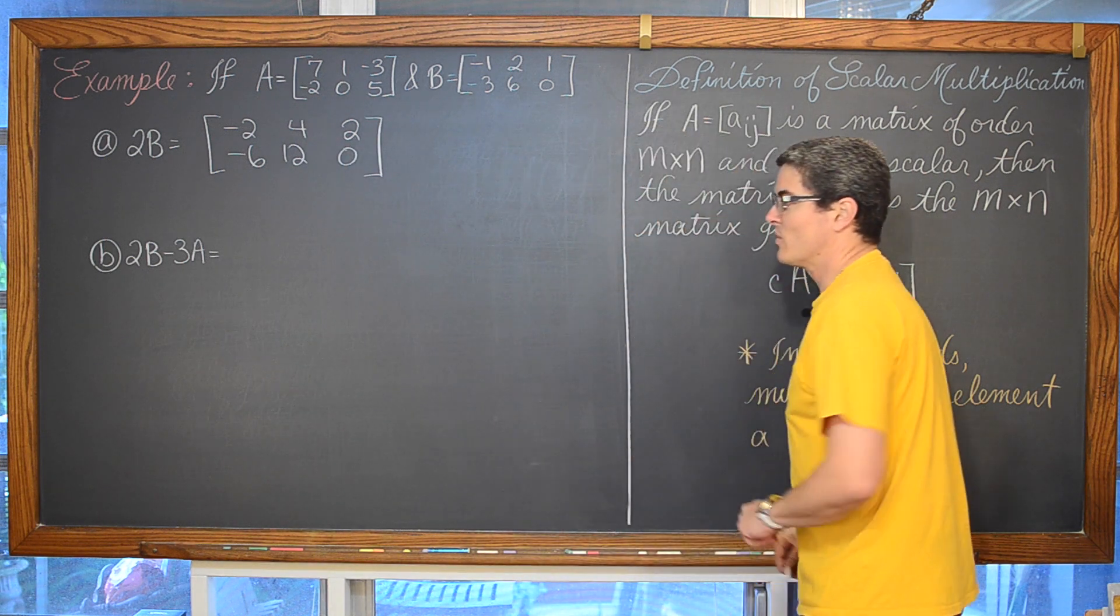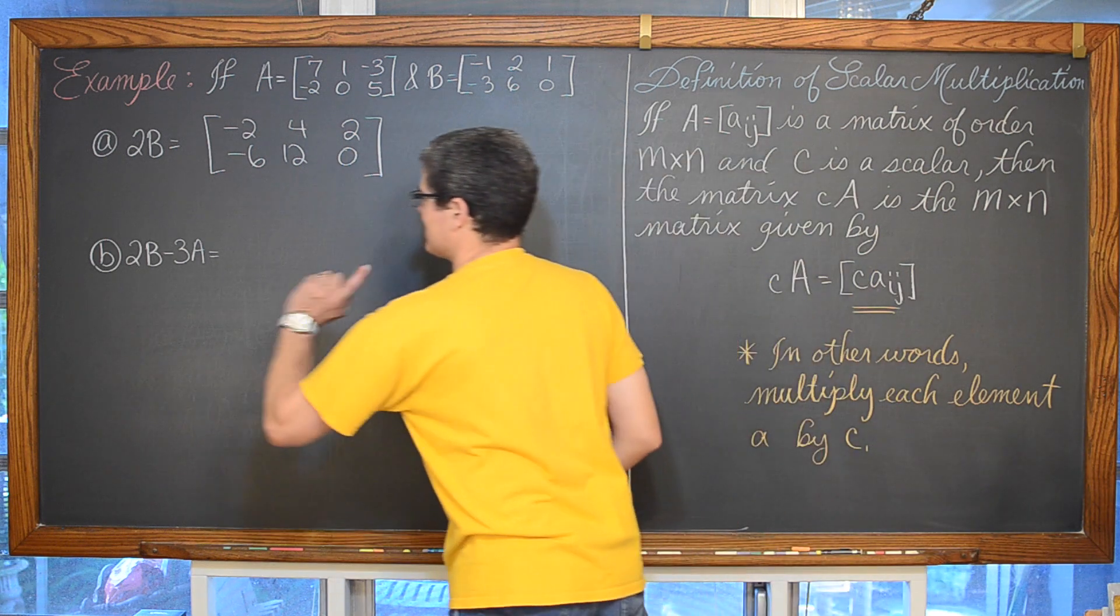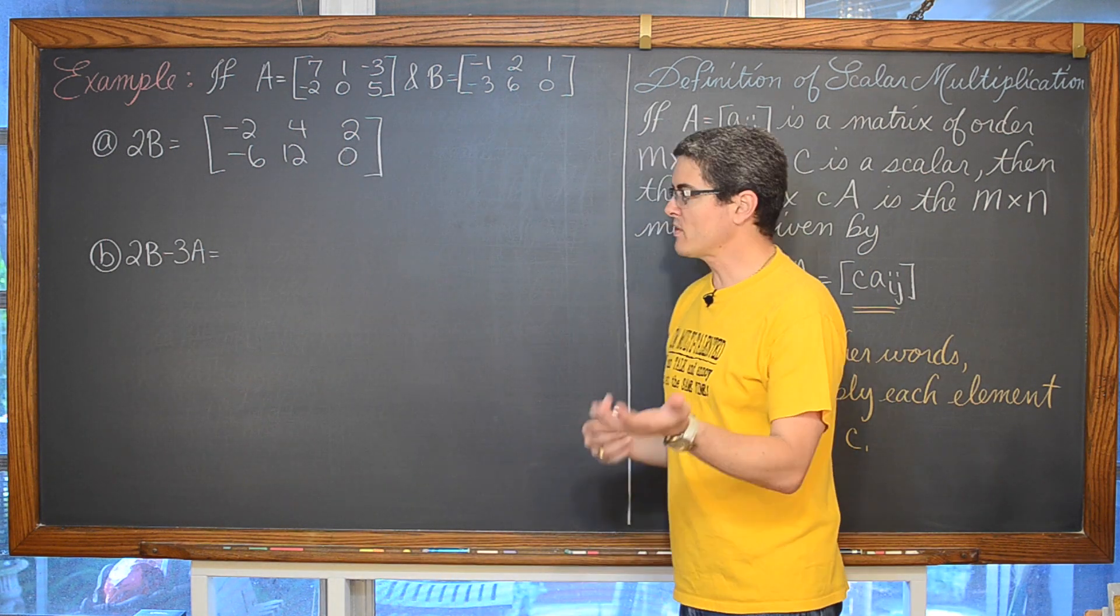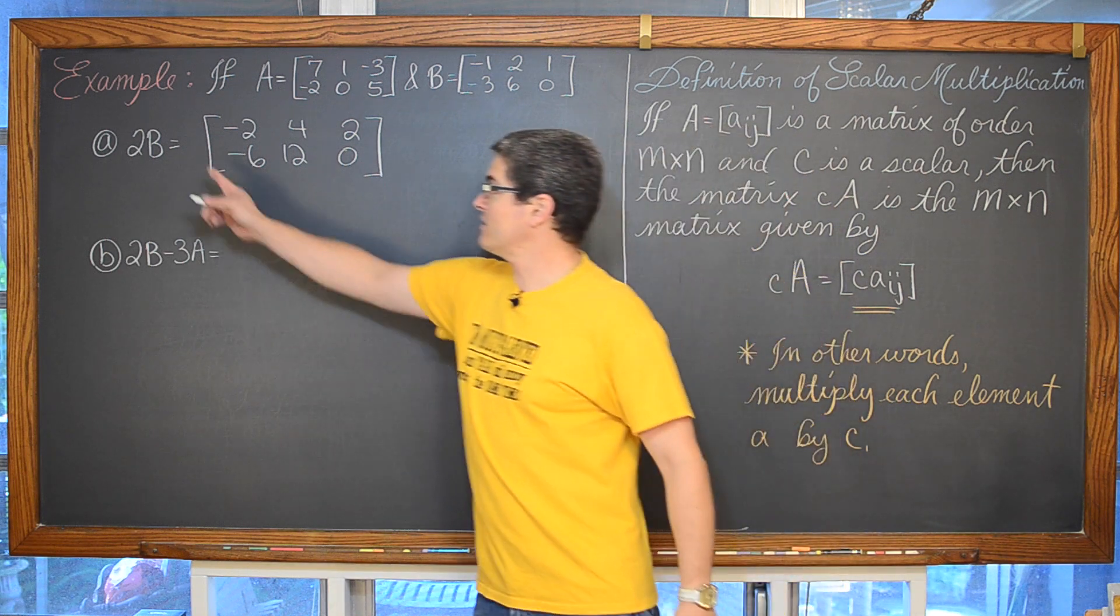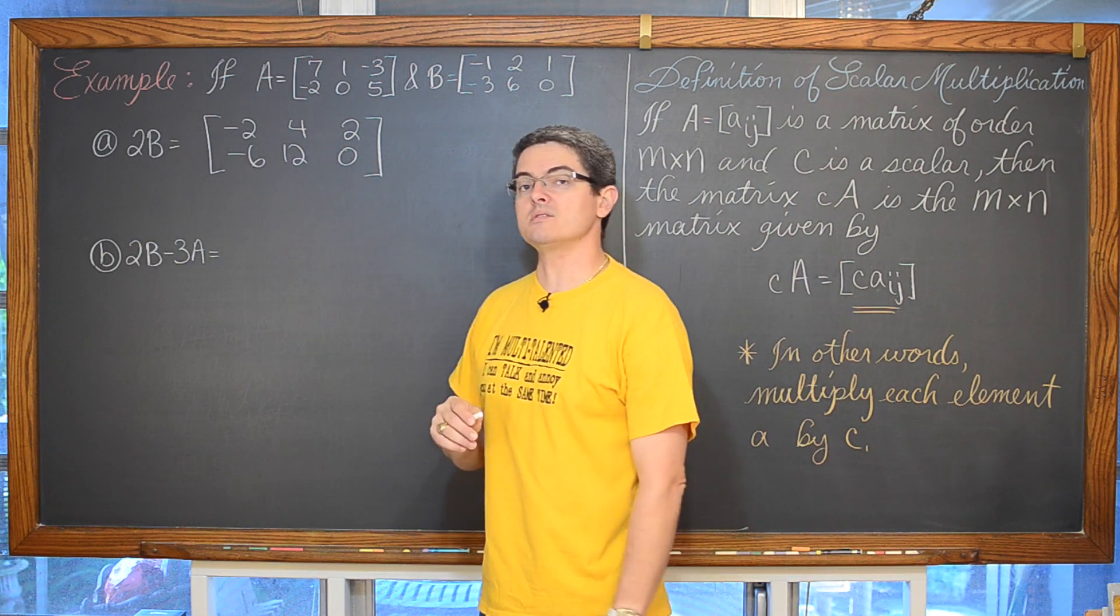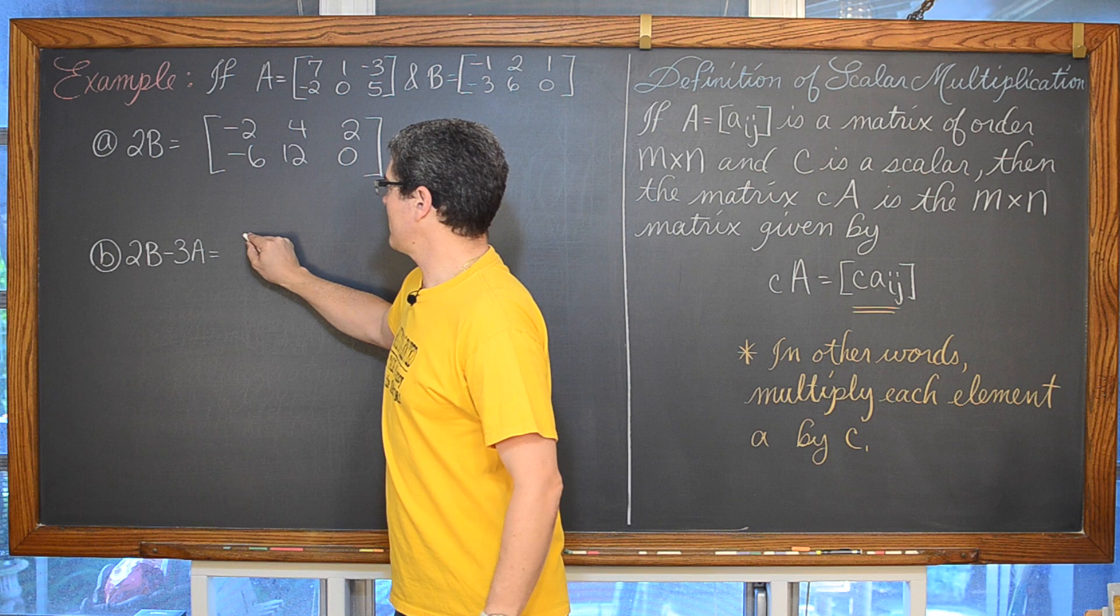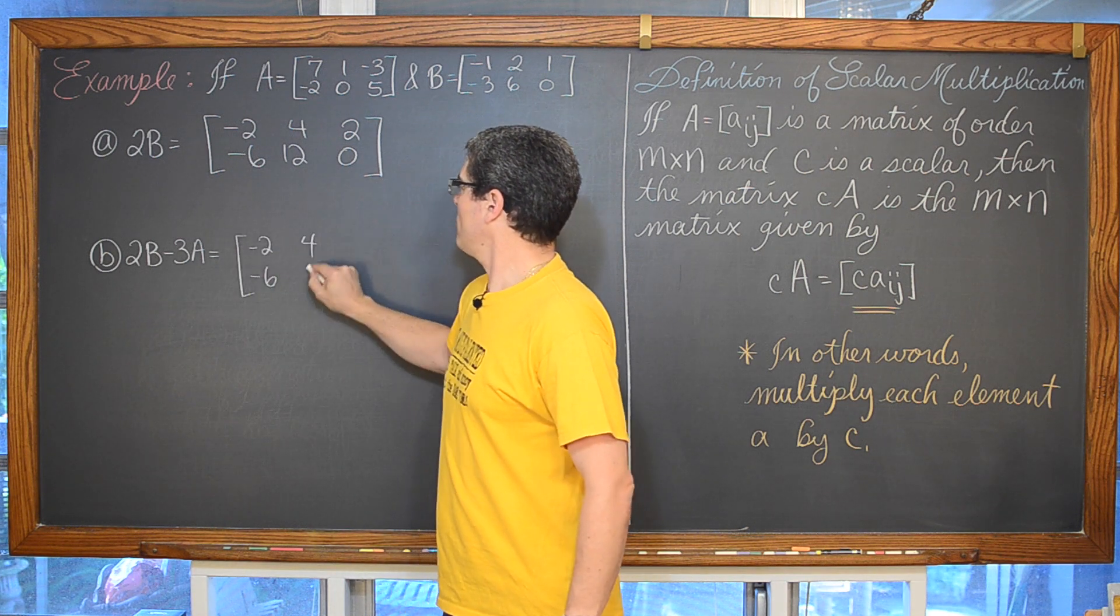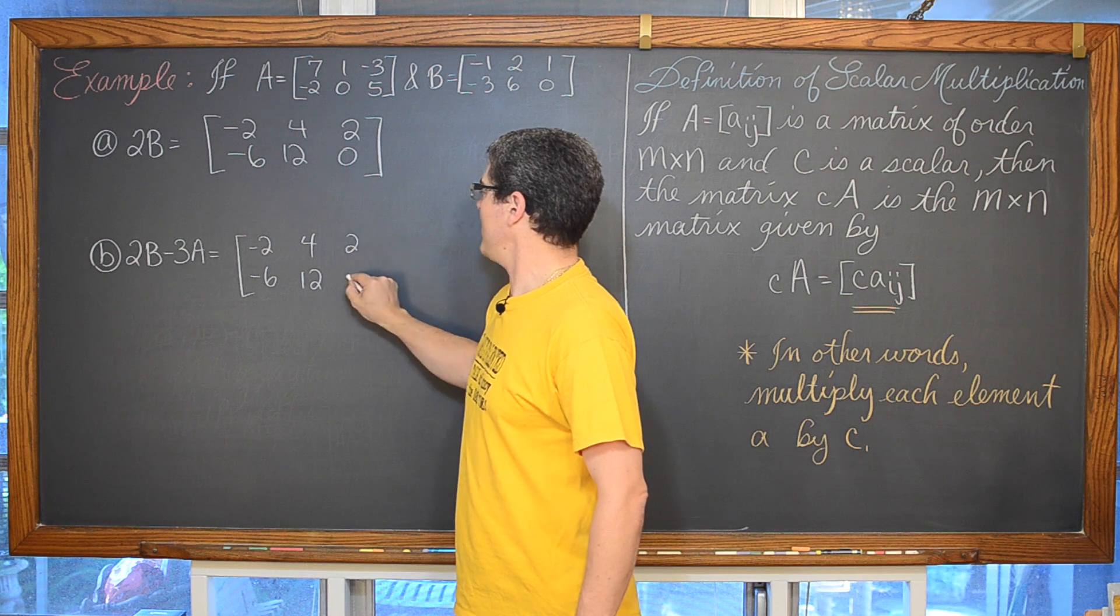And now we are going to do 2B minus 3A. Well I just wanted to save myself a little bit of work there on the fact that I have already figured out what 2B is equal to. So we are going to have that negative 2, negative 6, 4, 12, 2, and 0.